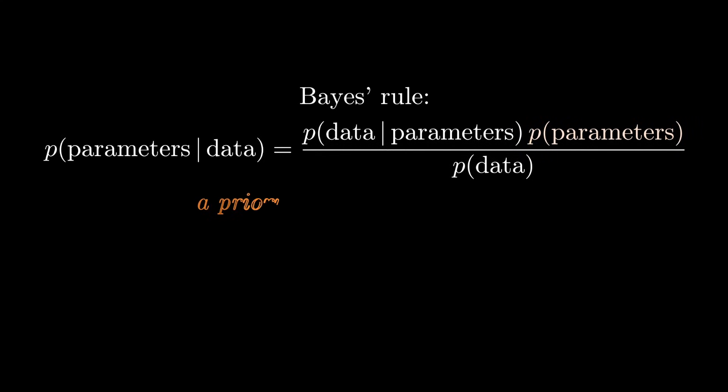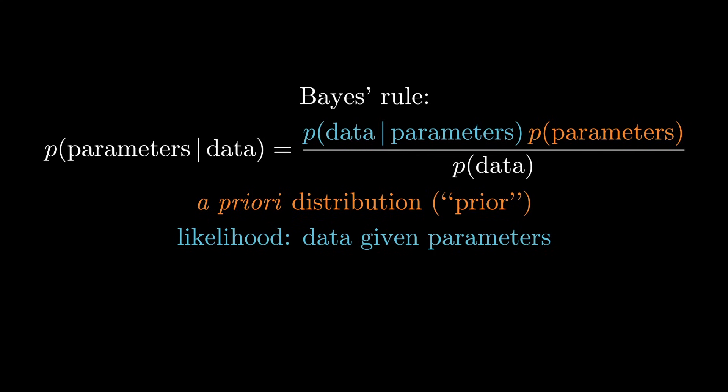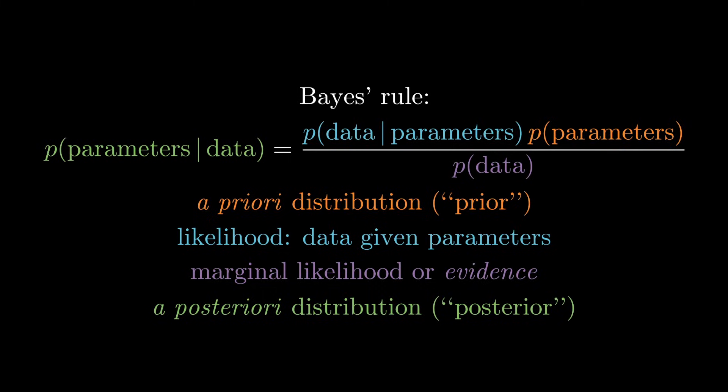In the language of Bayesian inference, we start with an a priori distribution over the parameters that we call a prior. Then the likelihood function scores those parameters according to how much probability they assign to the data. Then this function is normalized into a proper probability distribution by dividing it by the probability of the data or the marginal likelihood, sometimes also referred to as the evidence. Finally, we get the a posteriori distribution over the parameters conditioned on the data, sometimes called the posterior.